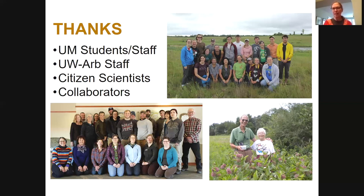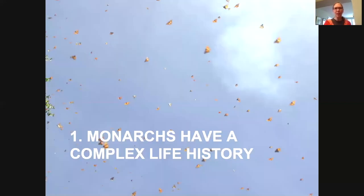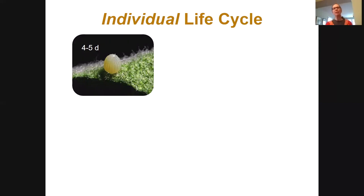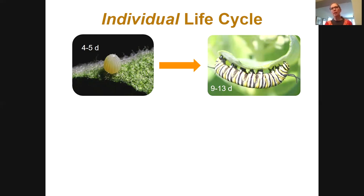I'd really like to thank citizen scientists. Now I'm going to start by talking about monarchs' life history — they have a very complex and amazing life history. I'll start with the individual life cycle, what an individual monarch goes through during the course of its life. It starts, of course, as an egg. Monarchs are eggs for about four to five days under normal summer conditions.